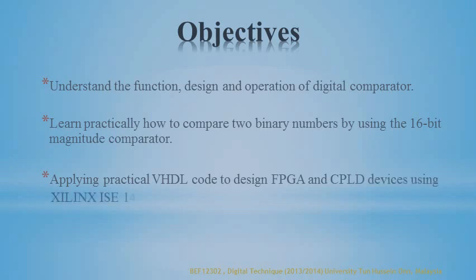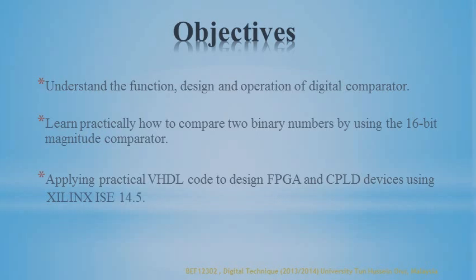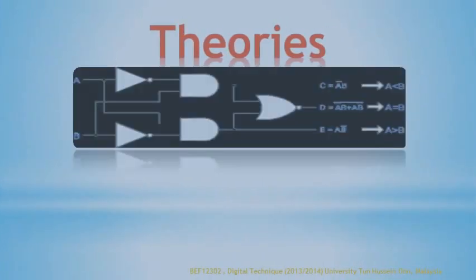Now let us talk about the basic theory of comparator. Considering A and B as input variables and C, D, and E as output variables. Referring to this circuit, the comparator takes two numbers as input in binary form and determines whether one number is greater than, less than, or equal to the other number. A comparator has two forms of condition: equality and inequality.